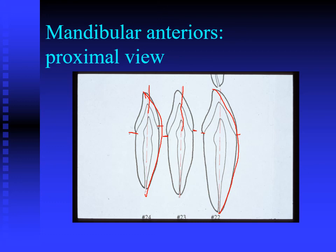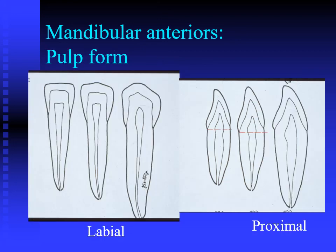From a proximal view, all anterior teeth will have a single pulp horn. The widest portion of the pulp chamber on all of these teeth is in the cervical one-third of the tooth. From the facial view, the pulp cavity follows the basic anatomical features of the tooth. There may be one or two pulp horns, but along with the anatomical features of the crown, these are not very distinct.